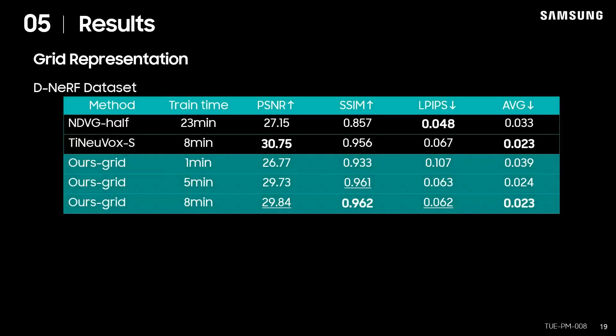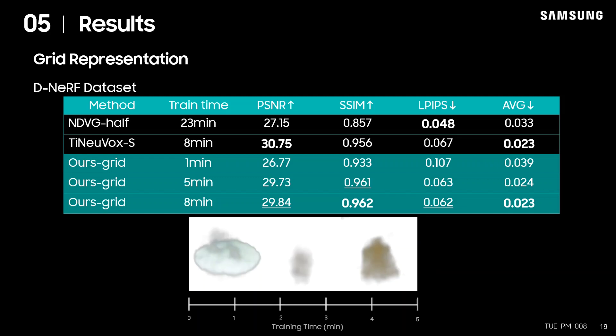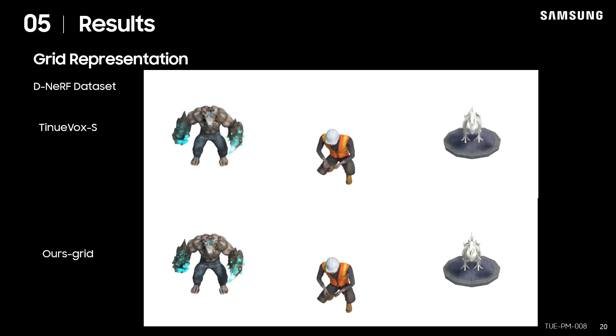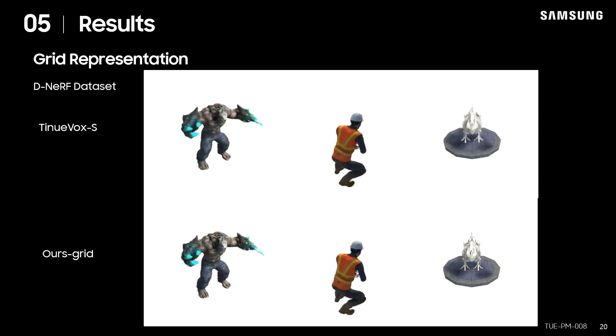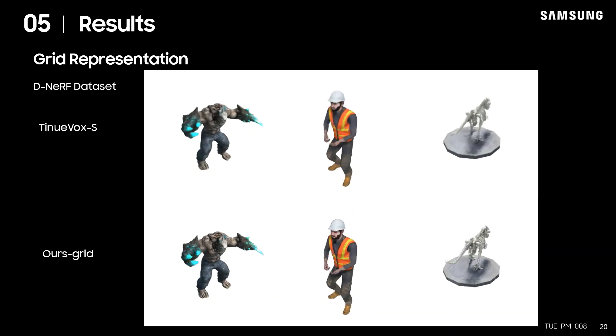Next, we demonstrate the results of our grid representation. Here, we compare the training results on the D-NeRF dataset with recently proposed fast-training dynamic NeRF methods. Our method shows competitive performance for only 5 minutes of training. Compared to the TiNeuVox models, when trained for the same period of time, our grid representation shows much clearer results.